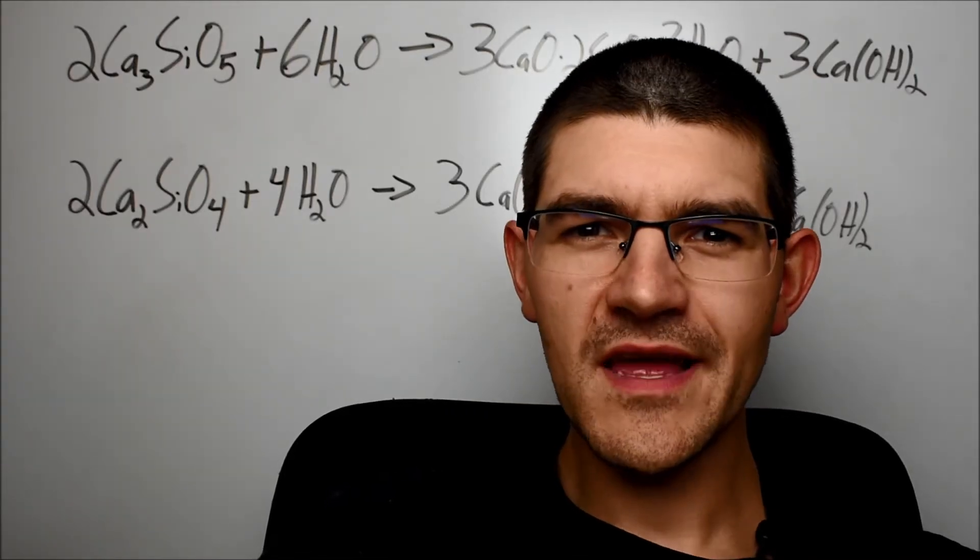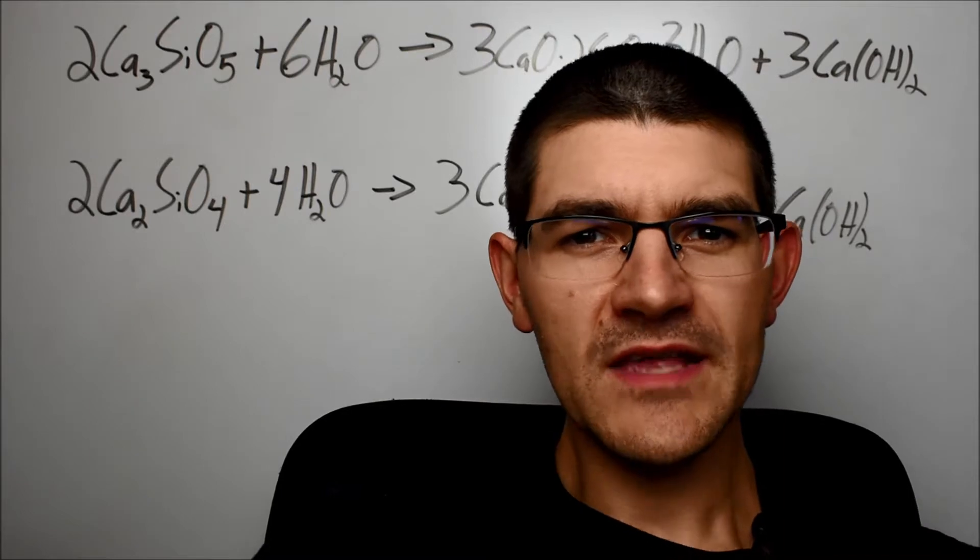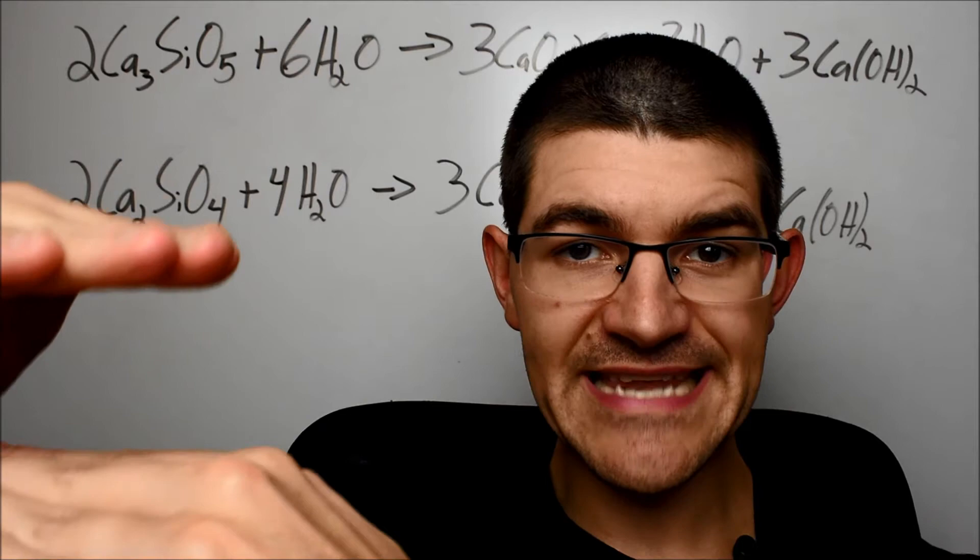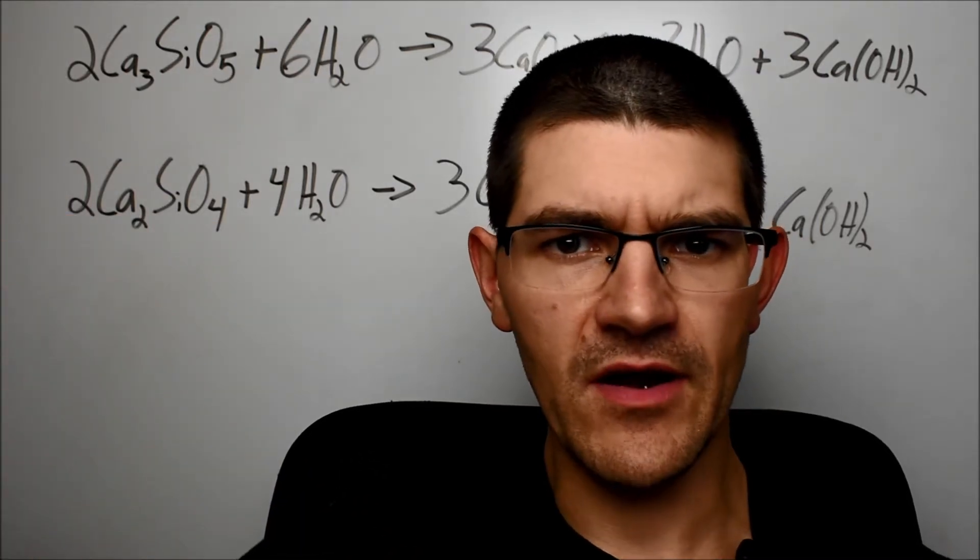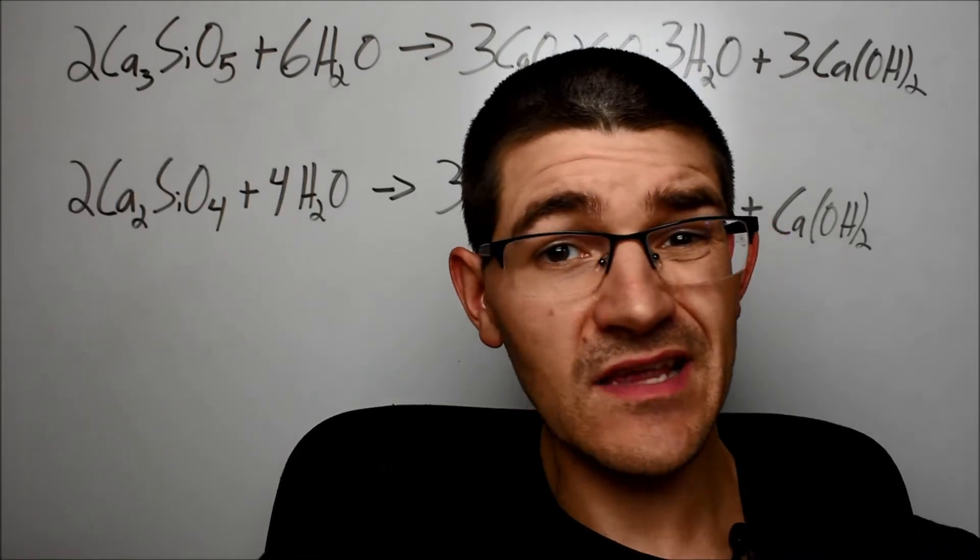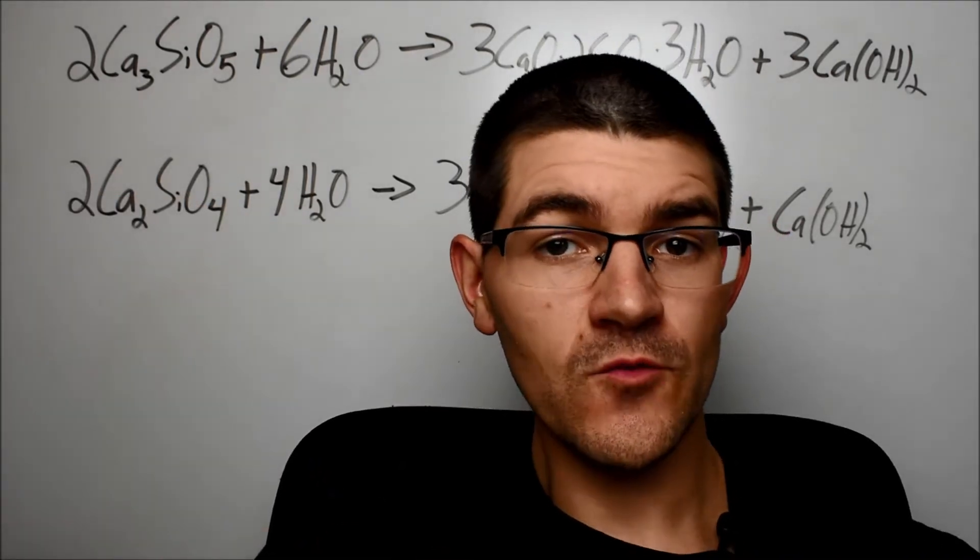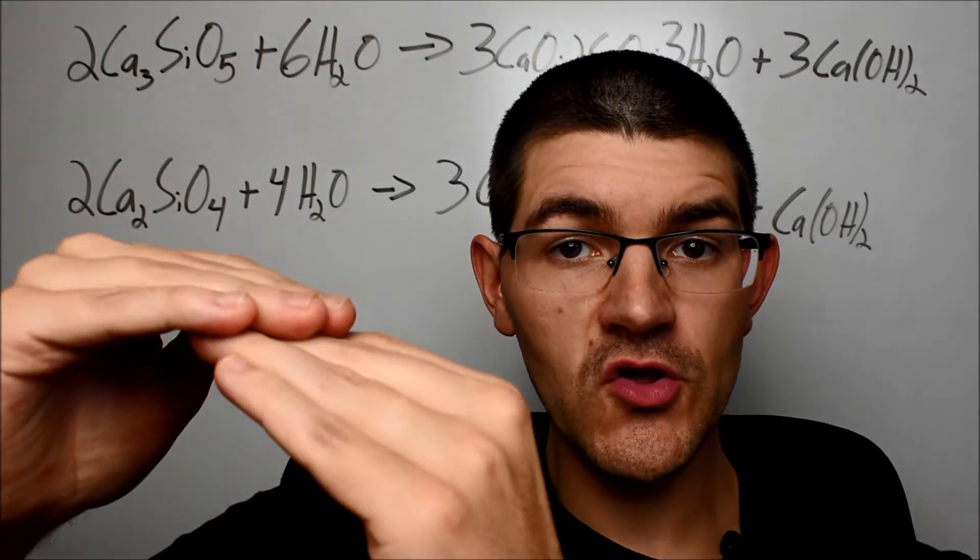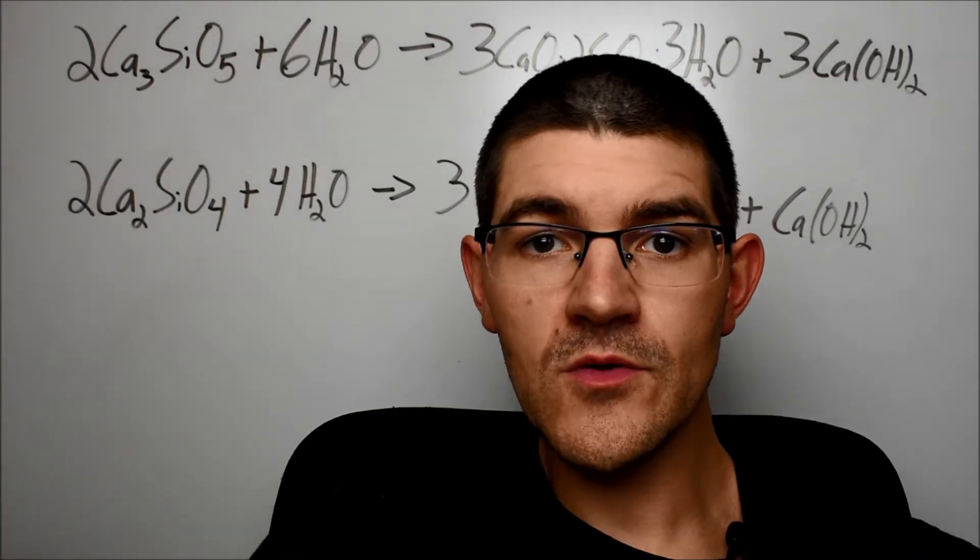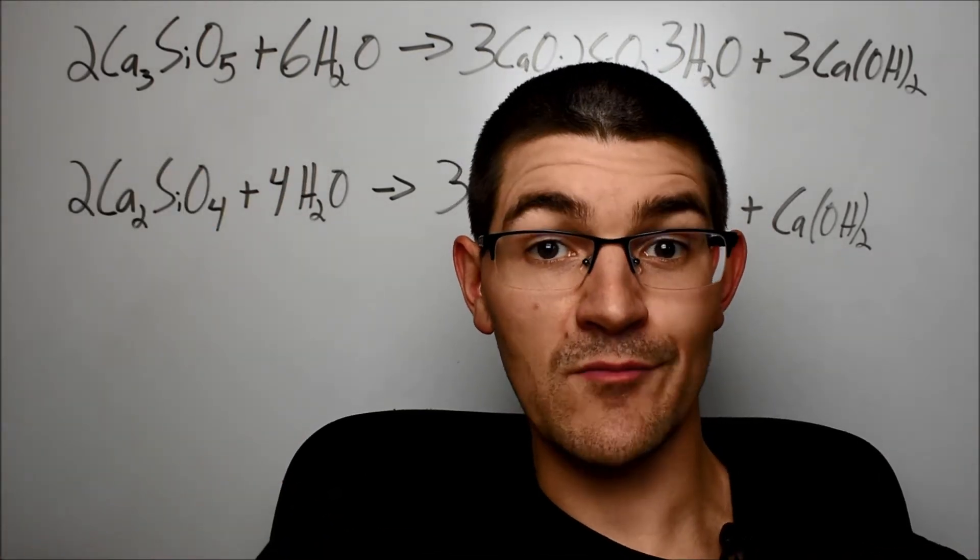Ever wonder why rebar is added to concrete to make it stronger? As it turns out, concrete is extremely compressively strong. So if we take it and we press down on the concrete, very, very, very high strength. But in tension, that is, pulling the concrete, it doesn't really have all that much strength. So the rebar, made from stainless steel, has very good tensile strength. So, when you put the rebar and the concrete together, you have a perfect blend of that tensile and compressive strength.